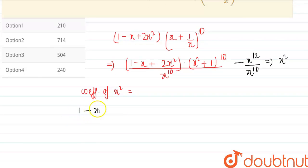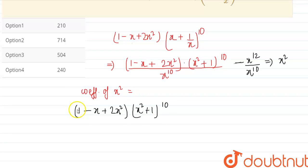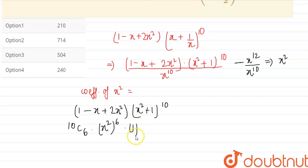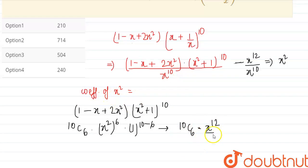We have (1 - x + 2x²) multiplied by (x² + 1)^10. For the first term (1), we need x^12 from (x² + 1)^10. This comes from the term 10C6 · (x²)^6 · 1^4, which equals 10C6 · x^12. On dividing by x^10, this gives the coefficient of x² as 10C6.